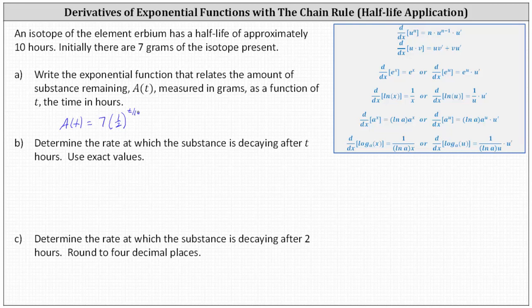Notice when t is 10, the exponent is one, we'd multiply seven by 1 half, leaving half the amount. If the half-life, for example, was five hours, the exponent would be t divided by five. If it was 20 hours, it'd be t divided by 20, and so on.